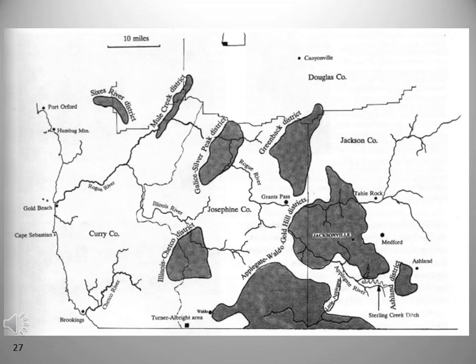The principal mineral-rich regions in the Klamath Mountains are located near Glaise and Silver Peak in the Greenback District near Ashland, in the Gold Hill-Applegate-Waldo area, and in the Chetco River watershed. Except for the Sixes River Coastal Mine, all of these utilize both lode and placer workings. Long recognized for its mineral wealth, the Klamath province has productive deposits of gold, silver, copper, nickel, and chromite.